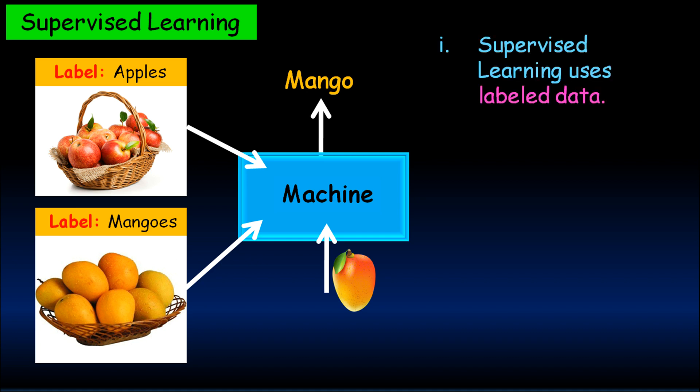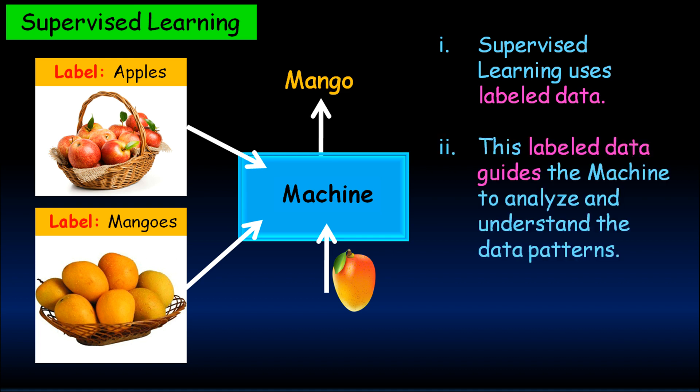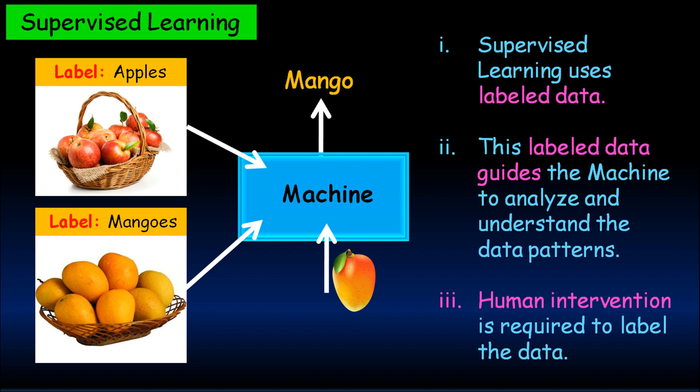Supervised Learning uses labeled data. This labeled data guides the machine to analyze and understand the data patterns. In supervised learning, human intervention is required to label the data.